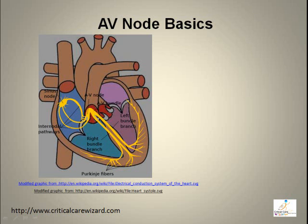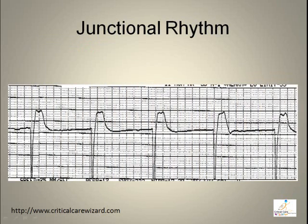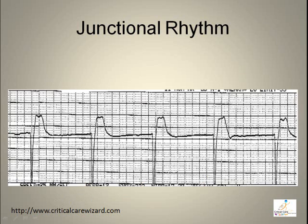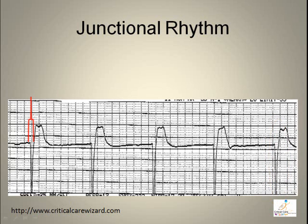Conduction originating from the AV node loses the P wave on the ECG. In junctional rhythm, it features a regular rhythm. The rate should be between 40 to 60 beats per minute. Another classic feature of a junctional rhythm is a missing P wave, with QRS duration less than 0.10 seconds.